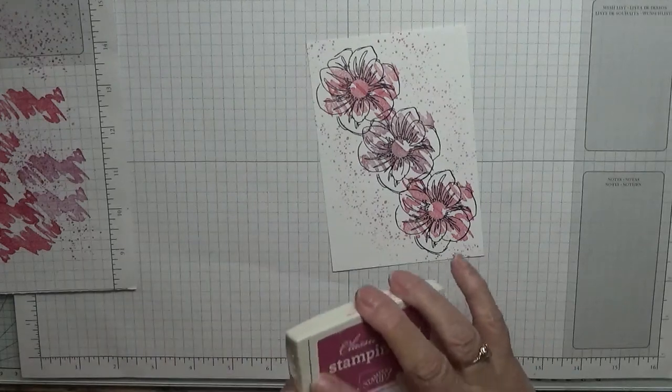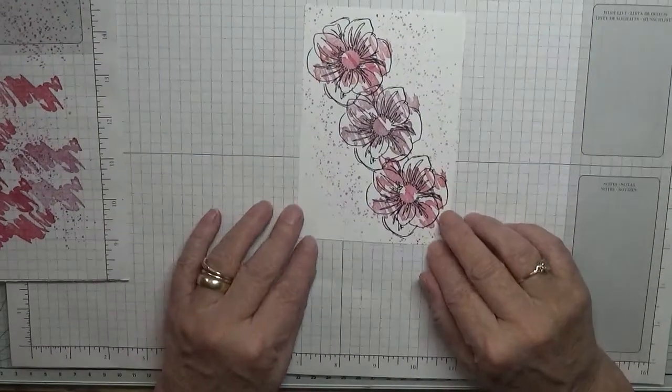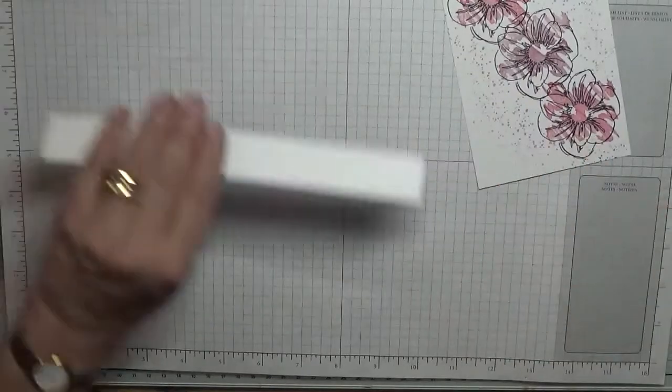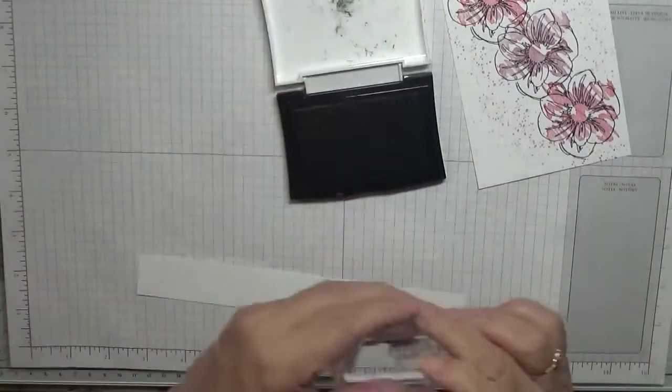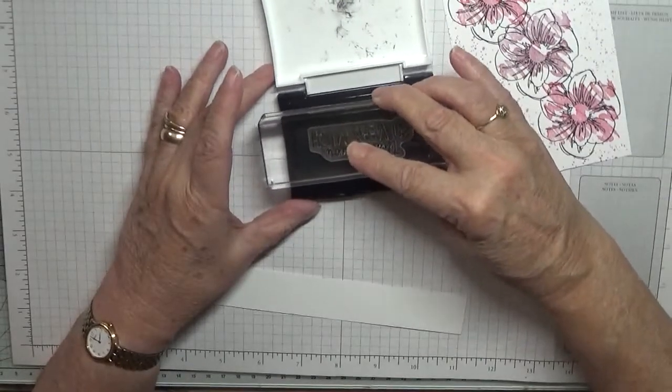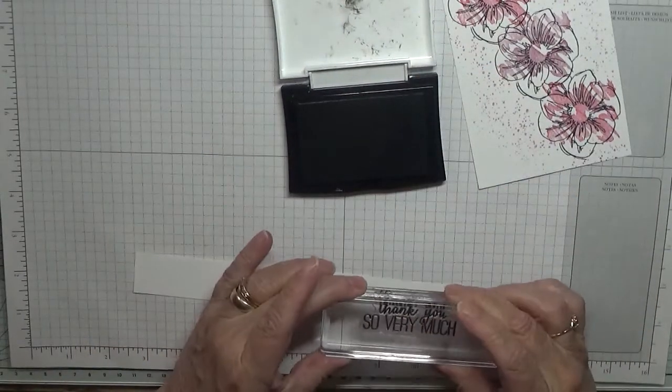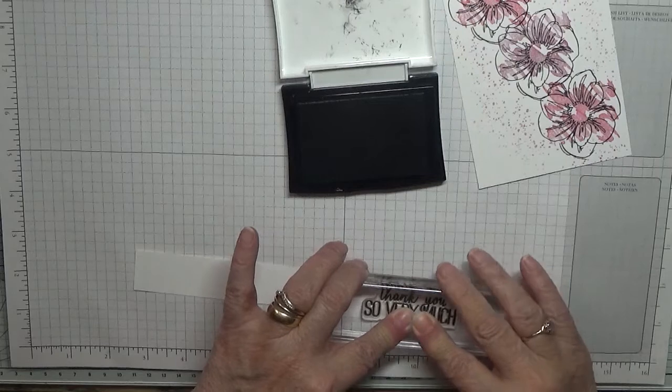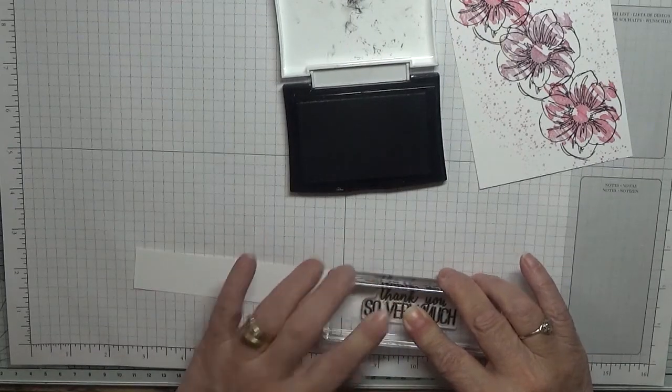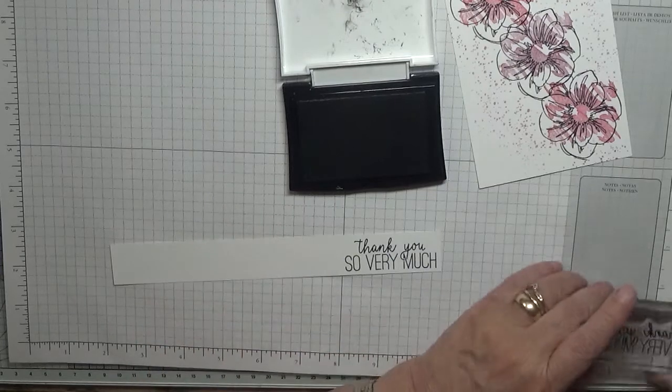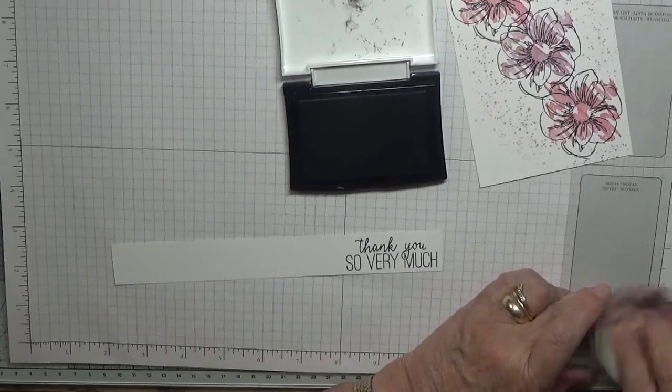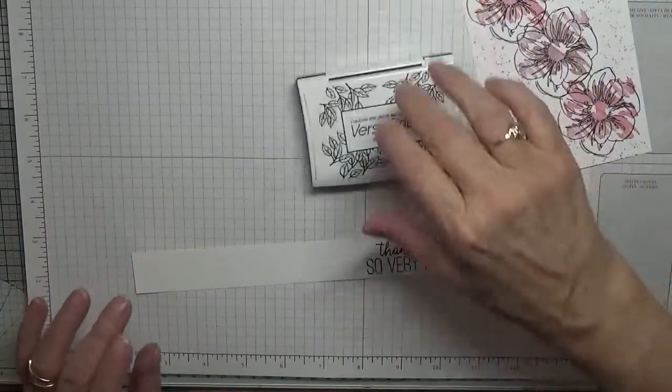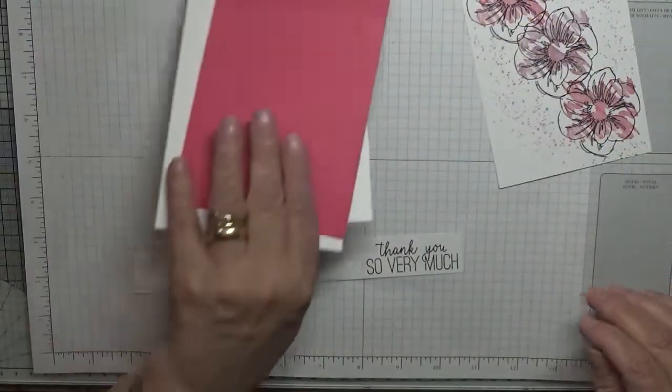That's that stamping done. That is the front of our card stamped. It's so quick and easy this one. I've got to do the sentiment. I'm going to pop this on. Thank you very much. All we've got to do now is put the card together. That's how quick and easy it is.